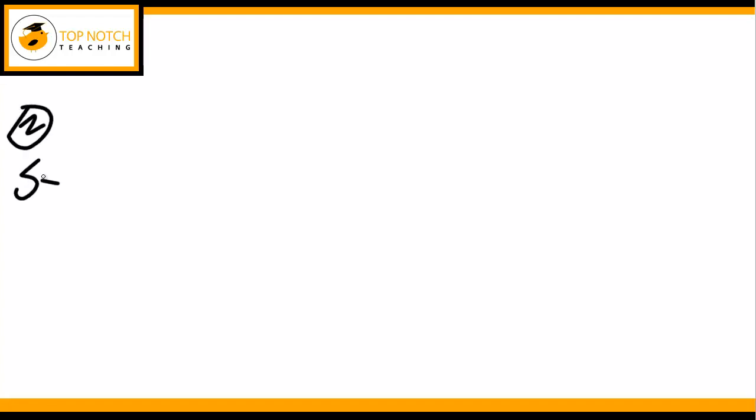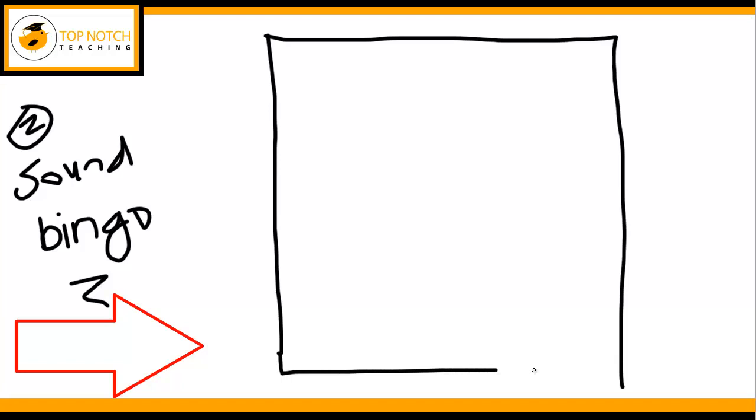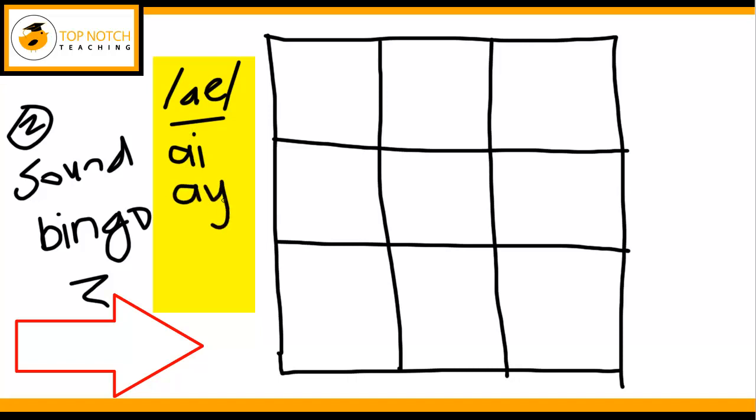So the second game I'd like to share with you is Sound Bingo. So with Sound Bingo this is actually really good if you've been focusing on a specific sound in class. So with a couple of my students we've been focusing on the A sound. And so far they've learnt that there's actually four different ways to spell the A sound. So they've learnt the AI spelling, the AY spelling of the A sound.